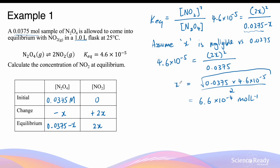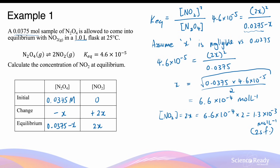The concentration of nitrogen dioxide is 2x, so [NO2] = 2 × 6.6 × 10⁻⁴ = 1.3 × 10⁻³ mol/L, which we keep to two significant figures. Now we'll calculate the same answer without making the assumption, to show that both approaches yield the same result.